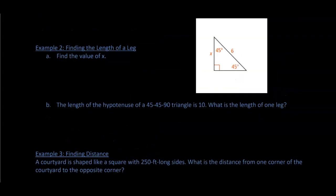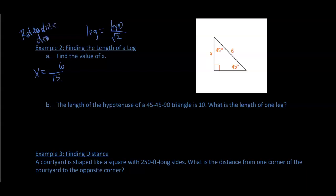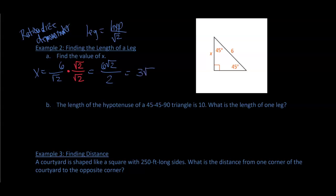In this example we are going the other direction — finding the length of a leg. The leg equals the hypotenuse divided by the square root of two. So we take six and divide by the square root of two. To rationalize the denominator, we multiply the numerator and denominator by the square root of two. That gives us six times the square root of two over two. Since six divided by two is three, the answer is three times the square root of two.